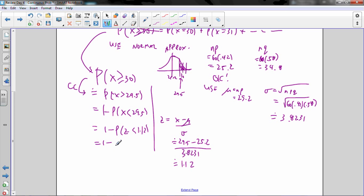1 subtract. 0.86. This is a Z score lookup, right, on your chart. And that is about 0.1314.